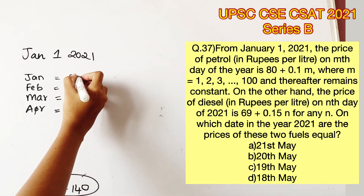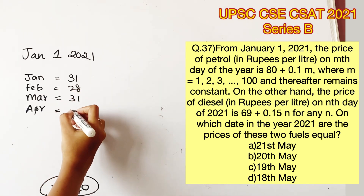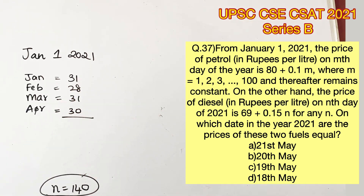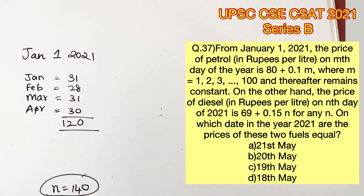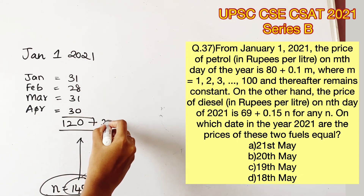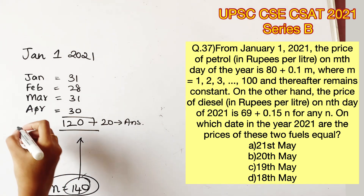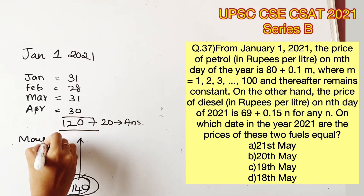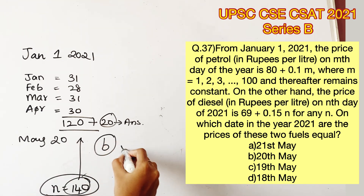Let's find the 140th day of the year. January has 31, February has 28, March has 31, April has 30 — adding these up gives 120. We need the 140th day, so we add 20 more days starting from May 1st. Therefore, May 20th is the 140th day, and option B is the correct answer.